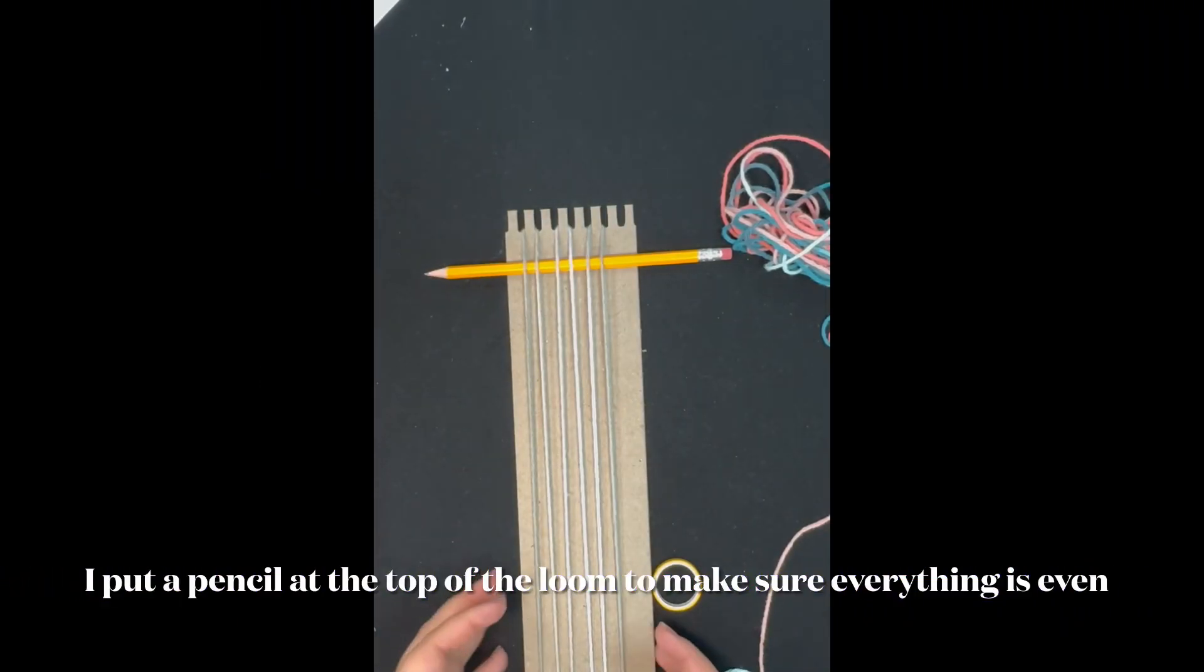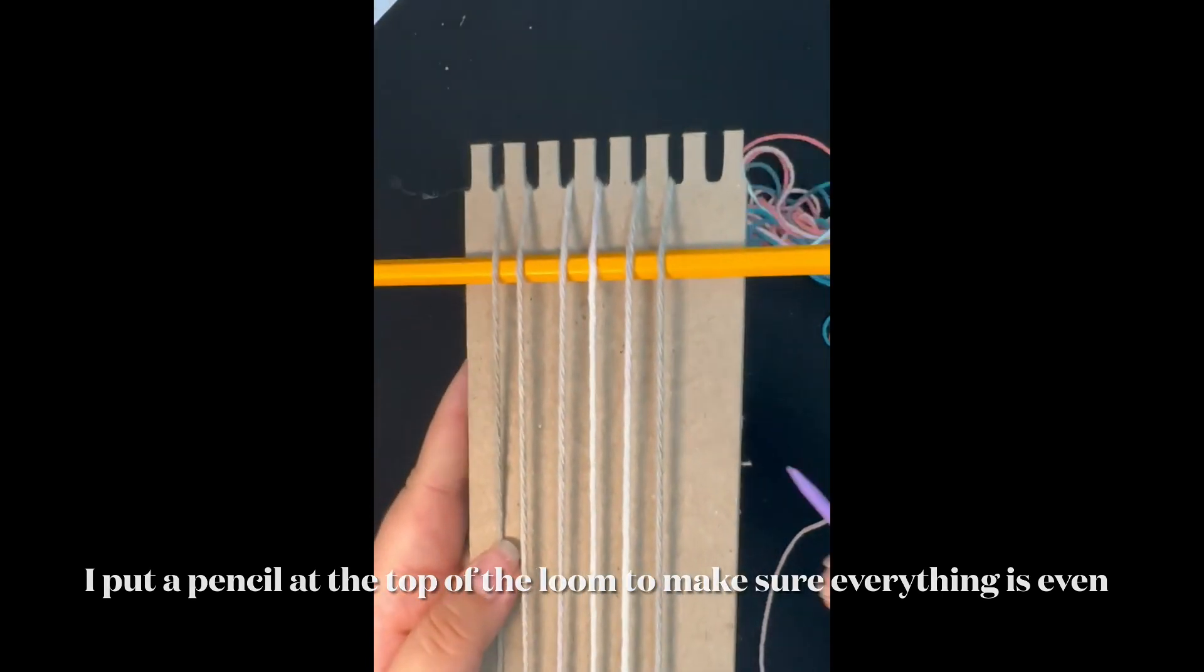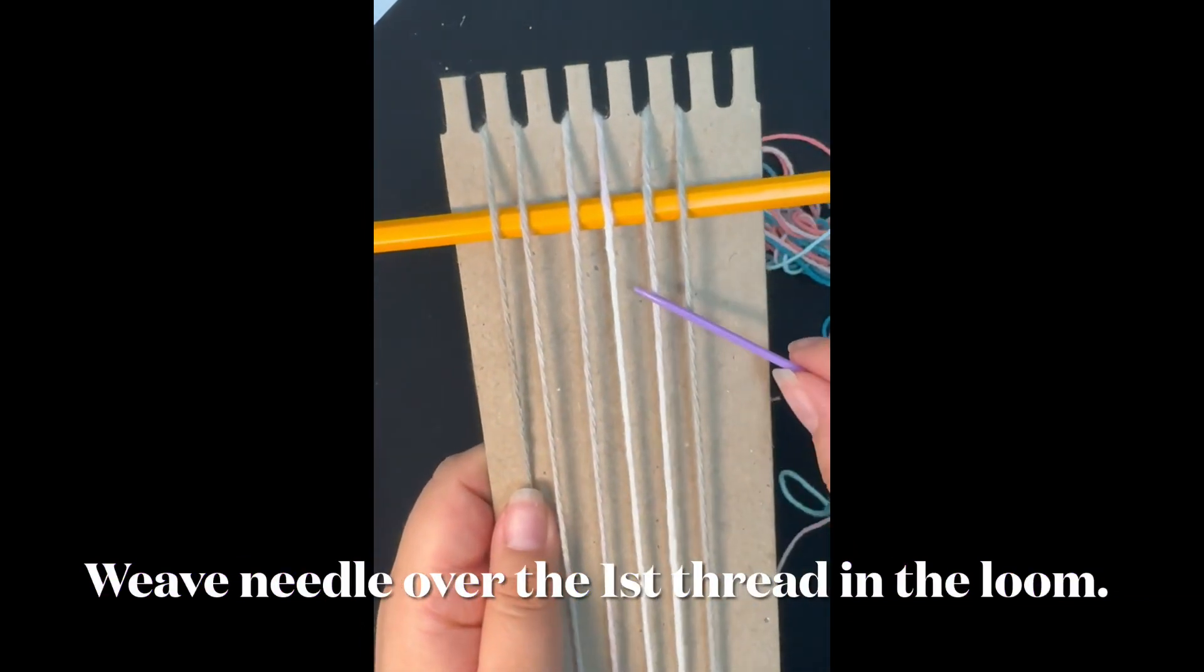It's really important that you put a pencil at the top of the loom to make sure that all of the edges are straight throughout your weaving process. Once you reach this step, we're going to start weaving.